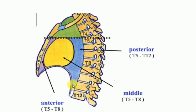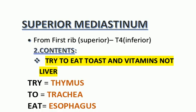Now let us discuss them one by one so that we may know what structures are present in these mediastinum. Starting from the superior mediastinum, from the first rib to T4. To memorize the contents of the superior mediastinum, here is a mnemonic: 'Try to eat toast and vitamins, not liver.'